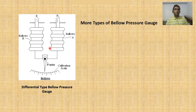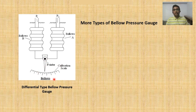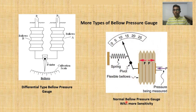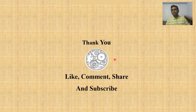The differential bellow pressure gauge measures differential pressure between P1 and P2. The proportionate deflection of bellows A and B causes the pointer to deflect on the calibrated scale. Another type is the spring-loaded bellow gauge — similar to the standard bellow gauge but with a spring added for higher sensitivity and more accurate measurement.